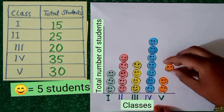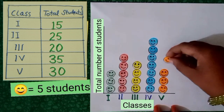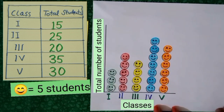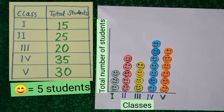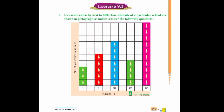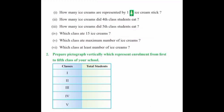And in 5th class there are 30 students. Counting: 5, 10, 15, 20, 25, 30. So students, we have prepared a vertical pictograph showing the total number of students from 1st to 5th class. Your homework is to solve the 1st and 2nd question from exercise 9.1, and in the 2nd question you will prepare a vertical pictograph of your school enrollment. Thank you students.